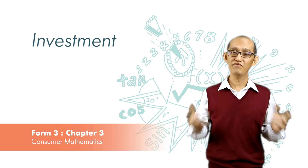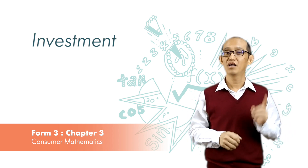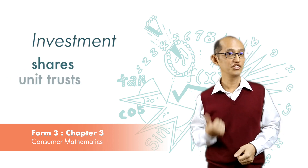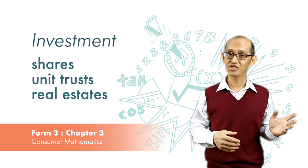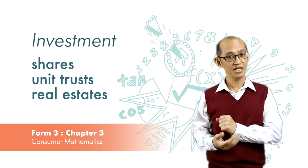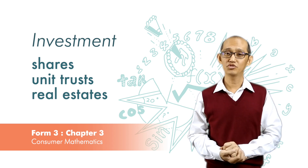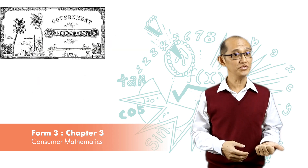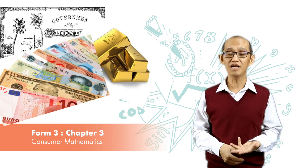So what can we do if you want to invest? First, you can buy shares, you can buy unit trusts, you can buy real estates such as houses, buildings, lands, and others. There are many other ways to invest, such as buying bonds, foreign currencies, gold, even diamonds, and many others.